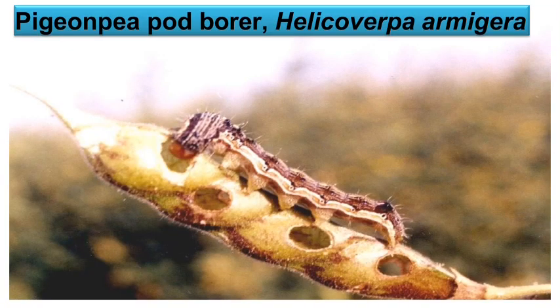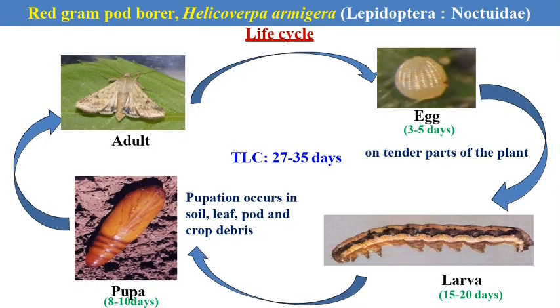The first and major pest of toor is Helicoverpa armigera — the pigeon pea pod borer. It is one of the most polyphagous pests which attacks on a number of hosts and causes severe yield loss. The caterpillar of Helicoverpa armigera attacks on the developing pods or developing grains. It is a lepidopteran pest with complete metamorphosis and four life stages: egg, larva, pupa and adult. After male-female mating, the female moth lays eggs on the tender parts of the plants, and after hatching, numerous caterpillars emerge due to the high fecundity rate of Helicoverpa.